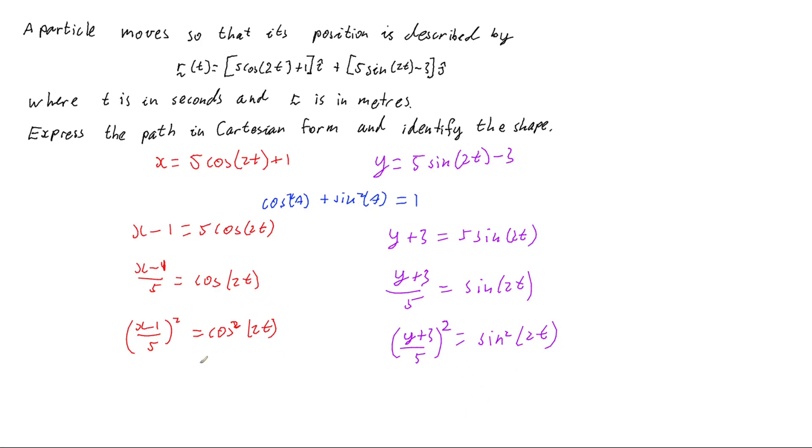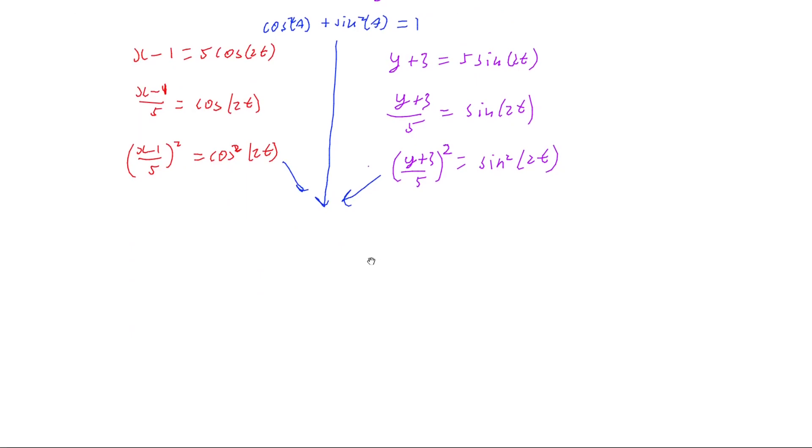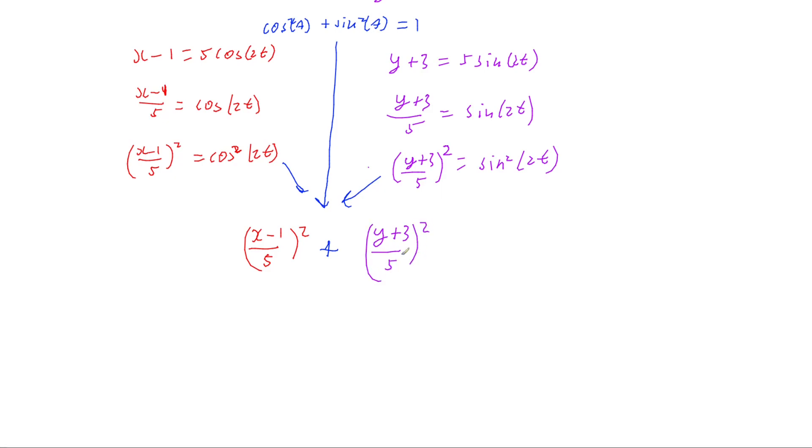So now that I've got my equations for cos squared and sine squared, I can go and substitute both of these into that equation. So if I go and substitute this information into my Pythagorean identity, then I'm going to get, well, it starts off with cos squared. We just showed that cos squared of 2t is x minus 1 on 5 all squared. And then we're going to add on the sine squared term, which we just showed is y plus 3 on 5 all squared. And then we can see that that equals 1.